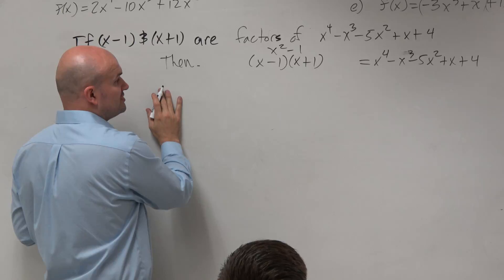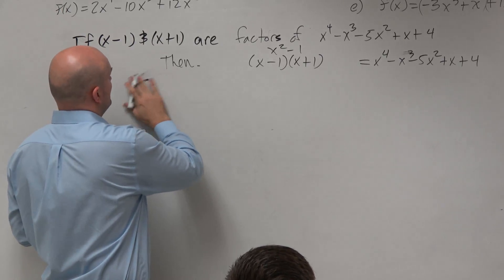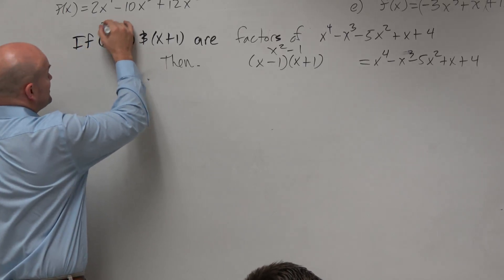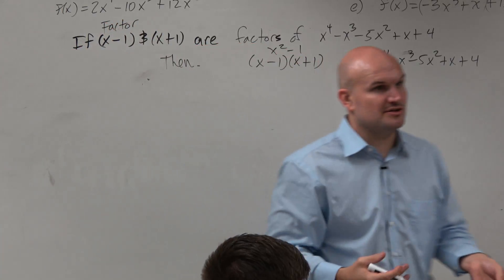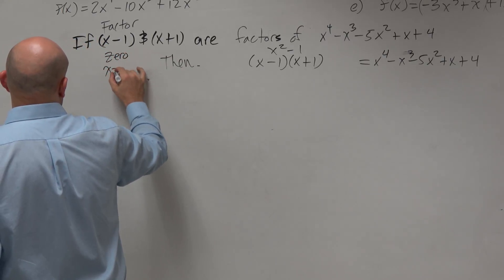Or I'm sorry, we're going to have to divide this twice. So if we're given a factor of x minus 1, then what is the 0? If x minus 1 is the factor, then the 0 is x equals 1.